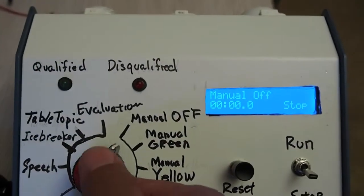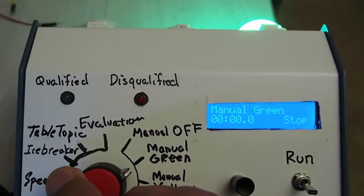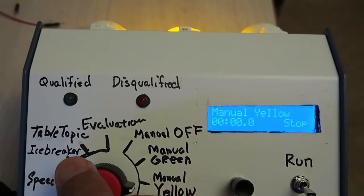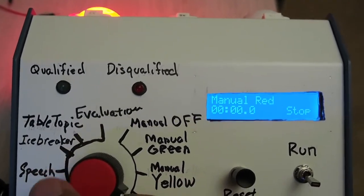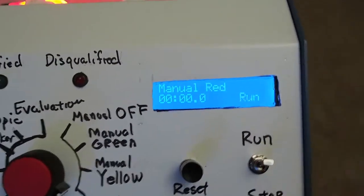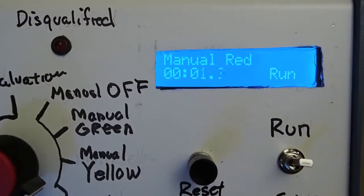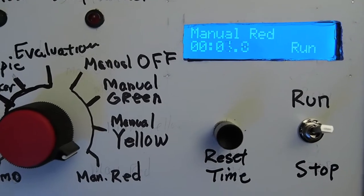So manual off, manual green, manual yellow, manual red. And of course you can still run the timer, and this is no worse than waving around a flag.